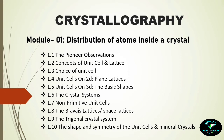The first module is about the distribution of atoms inside a crystal. I have subdivided module one into 10 classes. The first class will be about the pioneer observations — the observations made by our pioneer crystallographers. The next class will cover the concepts of unit cell and lattices, followed by a class on the perfect and prominent choice of unit cell within a given lattice.